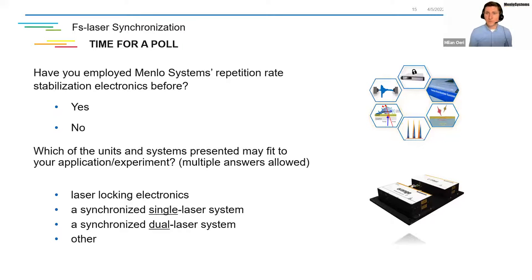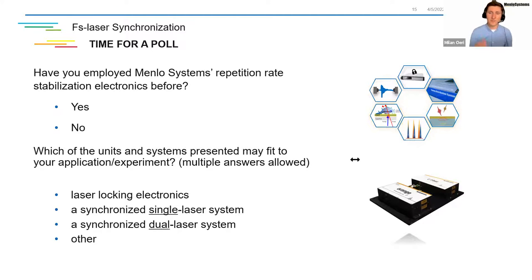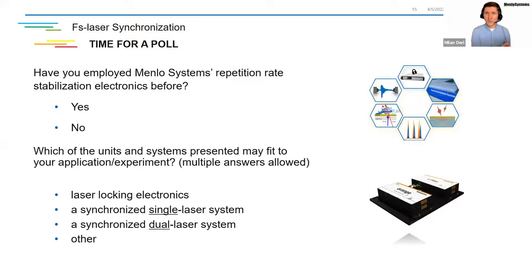A good third of you are using a Menlo Systems device for locking — I'm glad to hear this. Two-thirds of the people answering have not used a Menlo system so far — I'm glad as well. That's why we are here. As for the second question, the answers are quite nicely separated over all options, quite evenly distributed, with a little more people dedicated to laser locking electronics — the classic means of locking a laser to one single source. We will now move to a section where we look at how to employ the synchronization electronics for an ultra-fast optical sampling system.